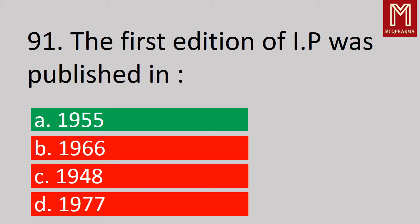Next question, the first edition of IP (Indian Pharmacopoeia) was published in — correct answer, Option A: 1955.